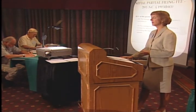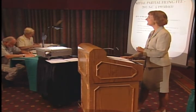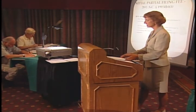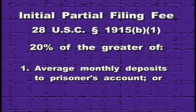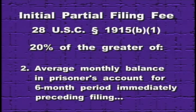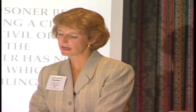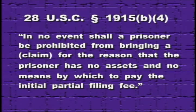First, there will be an initial partial filing fee assessed when an indigent inmate brings suit. The court will assess 20% of the greater of either the average monthly deposits to the prisoner's account or the average monthly balance over the preceding six-month period. If the math results in, say, a $3 initial fee but the inmate has absolutely no money in the trust fund account, Section 1915(b)(4) provides that if the prisoner has no assets and no means to pay the initial partial filing fee, that should not preclude adjudication of the claim.